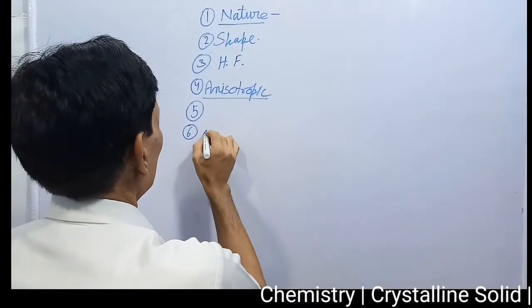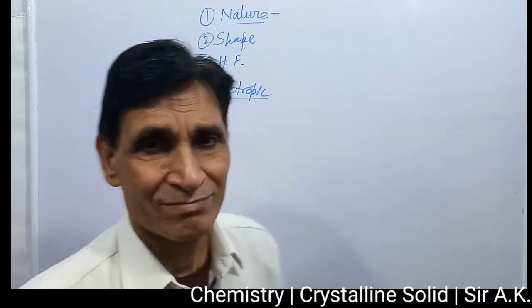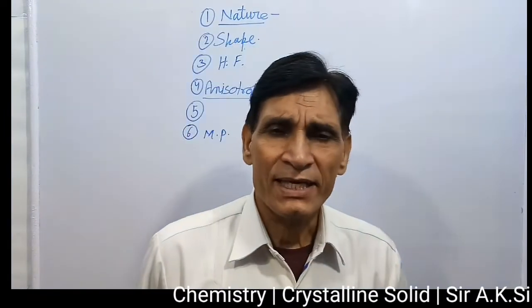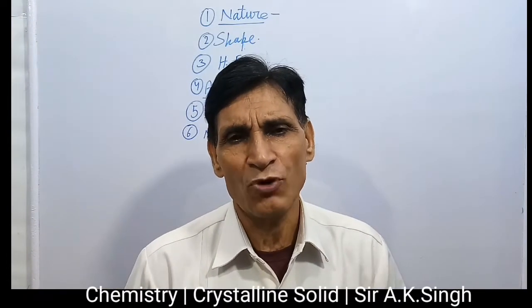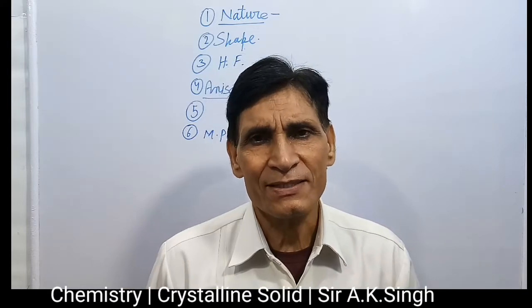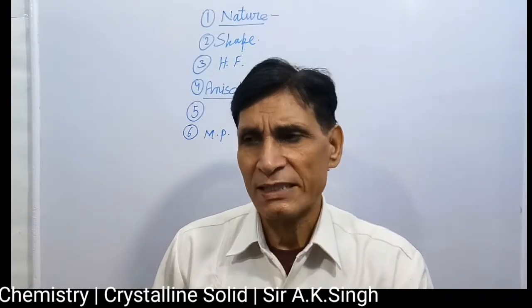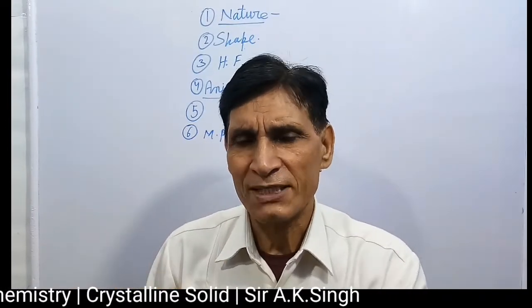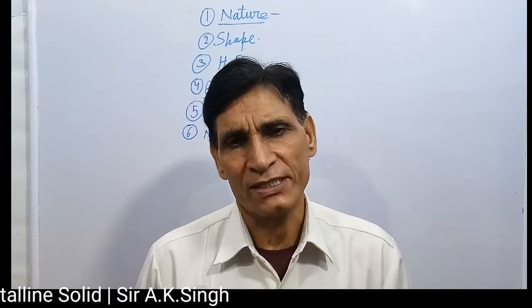Number six is melting point. Crystalline solids have certain definite melting points — they have sharp melting points. If they are heated, as soon as the temperature reaches the melting point, they will abruptly melt. So they have a definite, sharp melting point.